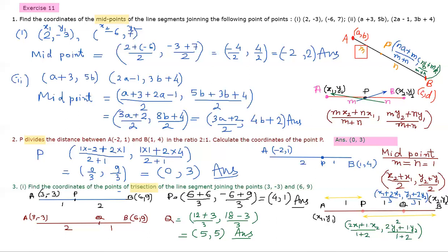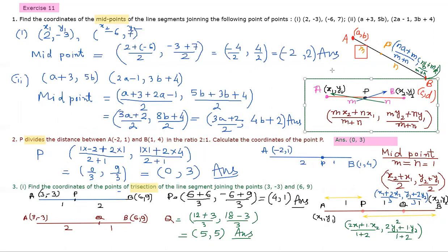This is how simply we can do these problems. The main formula — whether point of trisection or bisection — is the section formula for internal division, where the sign between the two terms is addition. If you enjoy this video, since it is related to your class 8, 9, 10, 11, 12 studies, please subscribe to my channel and press the like button so that you get this type of video as soon as I upload it. Thank you for watching.